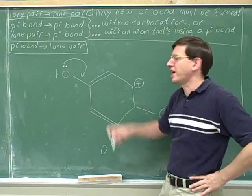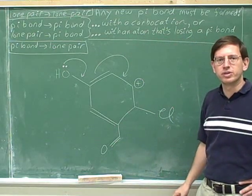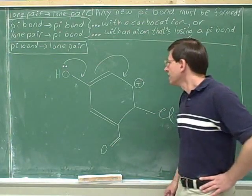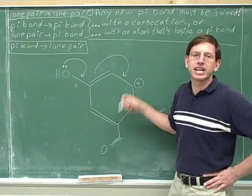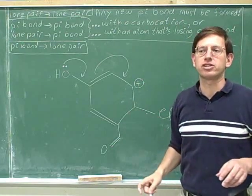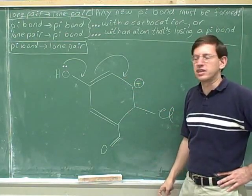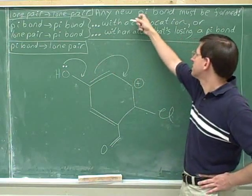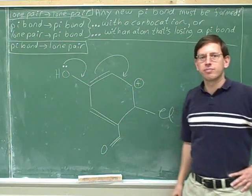Are there other arrows we could put here to move this pi bond? Well, now we're forming again a new pi bond over here — but now we're forming the pi bond with the carbocation. That's always fine: a carbocation always has plenty of room for more electrons. So we don't need to worry about exceeding an octet. This carbon is gaining a pi bond and losing a pi bond — that's fine. So this is another arrow that would work.